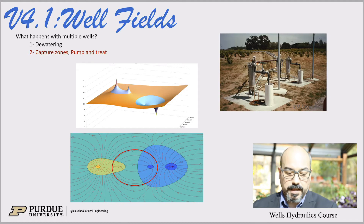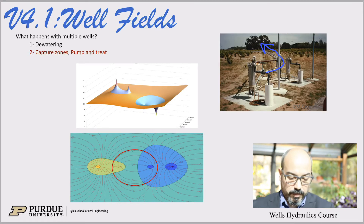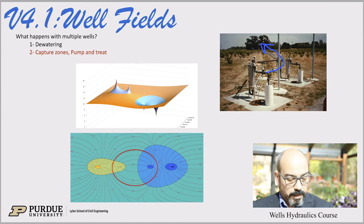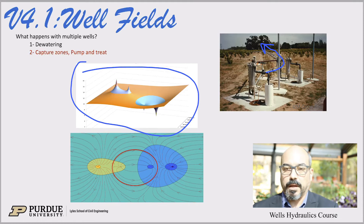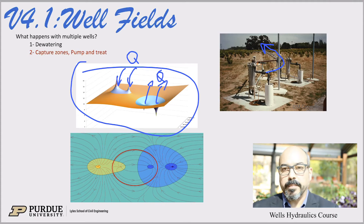Another example is pump and treat systems. On the right-hand side, you have a picture of an actual pump and treat site where you can see there are two different pumping wells. You can see the pipes carrying that water away to some surface treatment facility. Once the water is treated, maybe it's re-injected in the aquifer, or it may be discarded in the surface water if permitted. On the left-hand side, we have our Excel finite difference model showing a four-well system with two pumping and two injection wells going back into the aquifer.